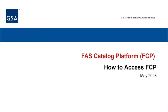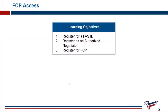Welcome to the How to Access FCP training module of the Fast Catalog Platform, or FCP, vendor training series. In this module we will discuss how vendors can expect to access the FCP — more specifically, how vendors can register for a FAST ID, register as an authorized negotiator on a contract, and then register for the FCP application.